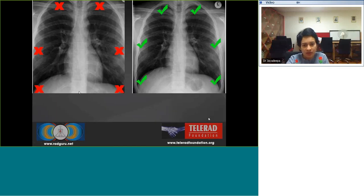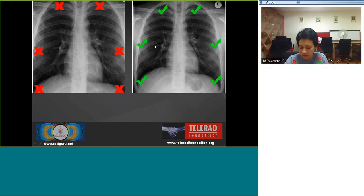When interpreting the radiograph, it is very important to assess the adequacy of the lung fields. The first ribs have to be included within the field of view. We should be able to view the lateral edges of all the ribs, and the costophrenic angles have to be included within the field of view. This constitutes a fairly well-done optimal chest radiograph.